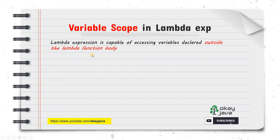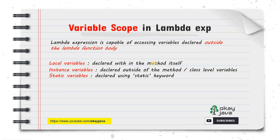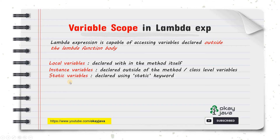Lambda expressions are capable of accessing variables declared outside the lambda function body. Within a lambda expression you can access local variables — a local variable is a variable declared within the function itself. Lambda expressions can also access instance variables, which are declared outside the function but within the class. And then we have static variables, declared using the keyword 'static'.